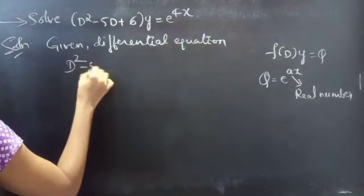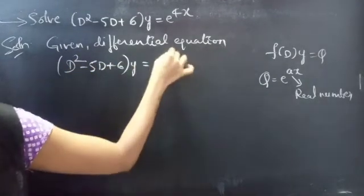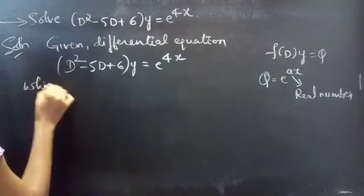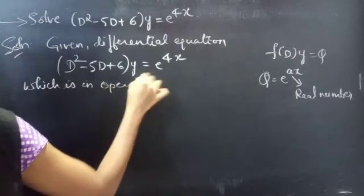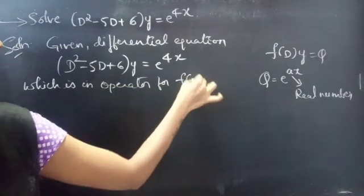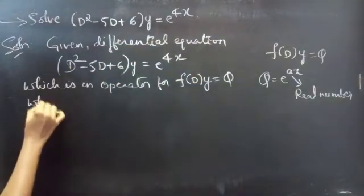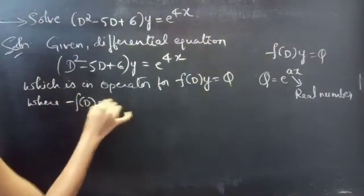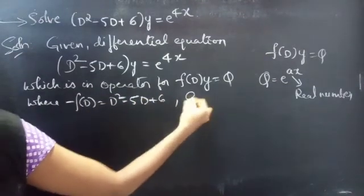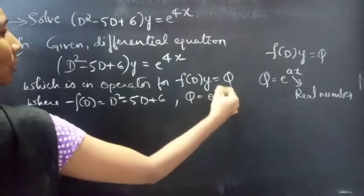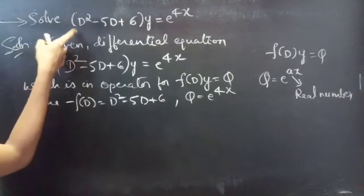So (D² - 5D + 6)y = e^(4x) is the operator form, where f(D)·y = Q, with f(D) = D² - 5D + 6 and Q = e^(4x). Now we need to find the general solution to this equation.